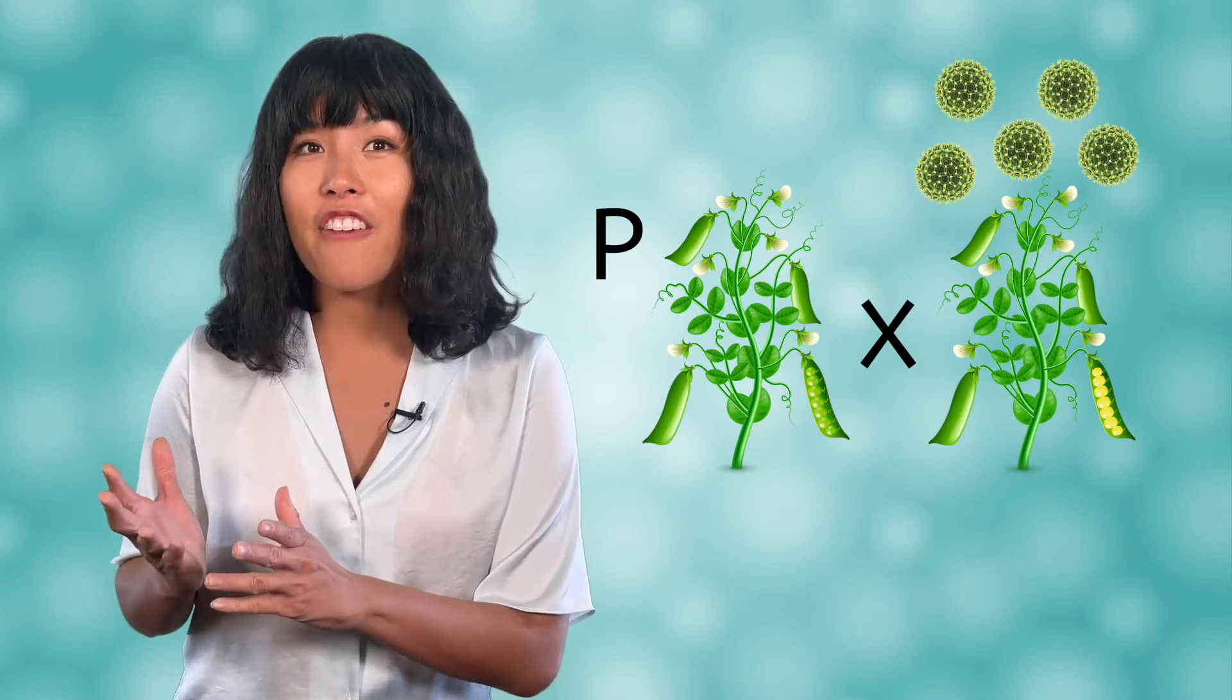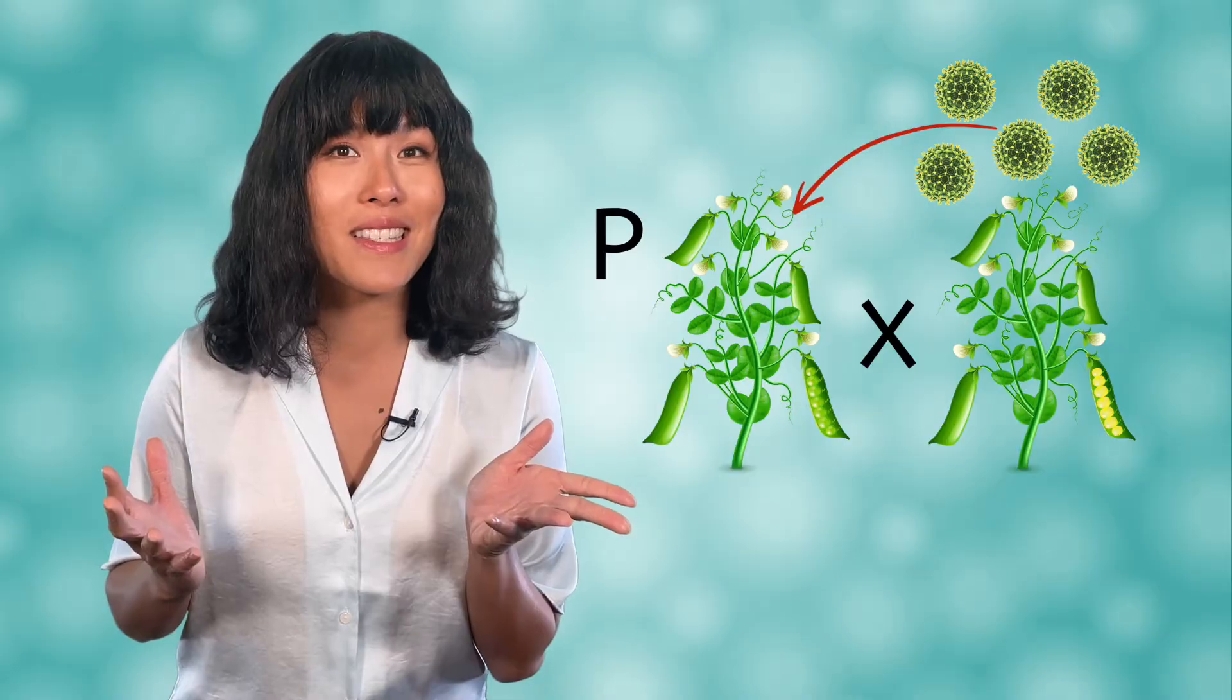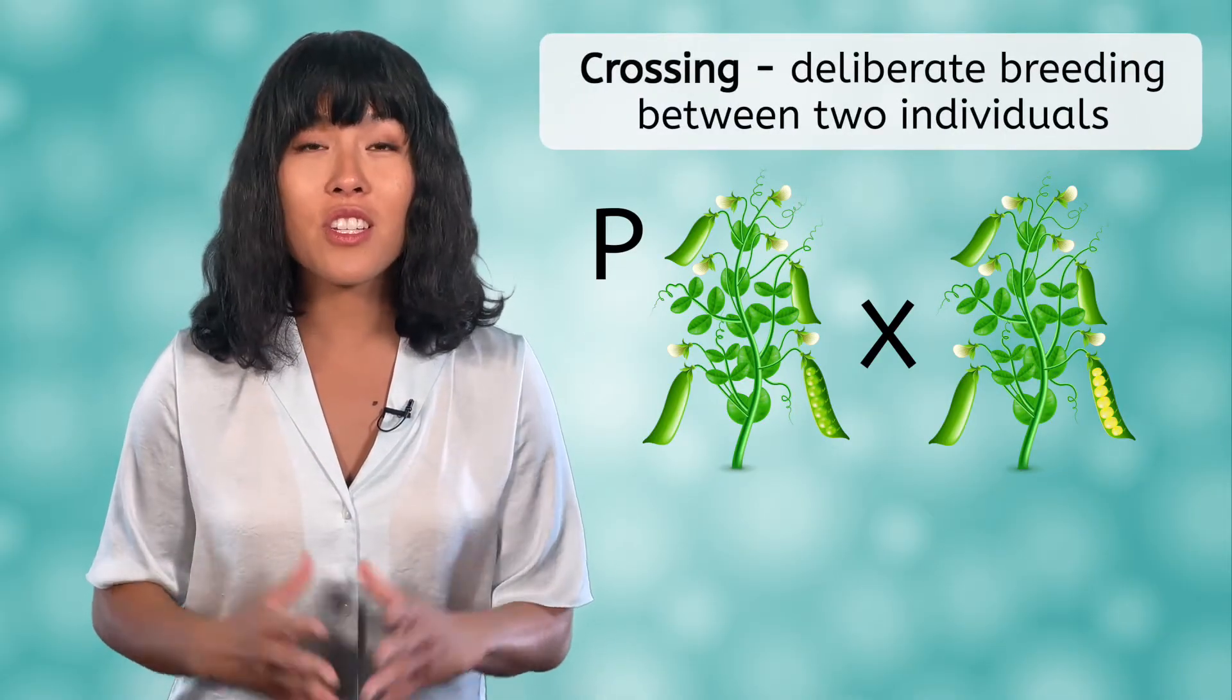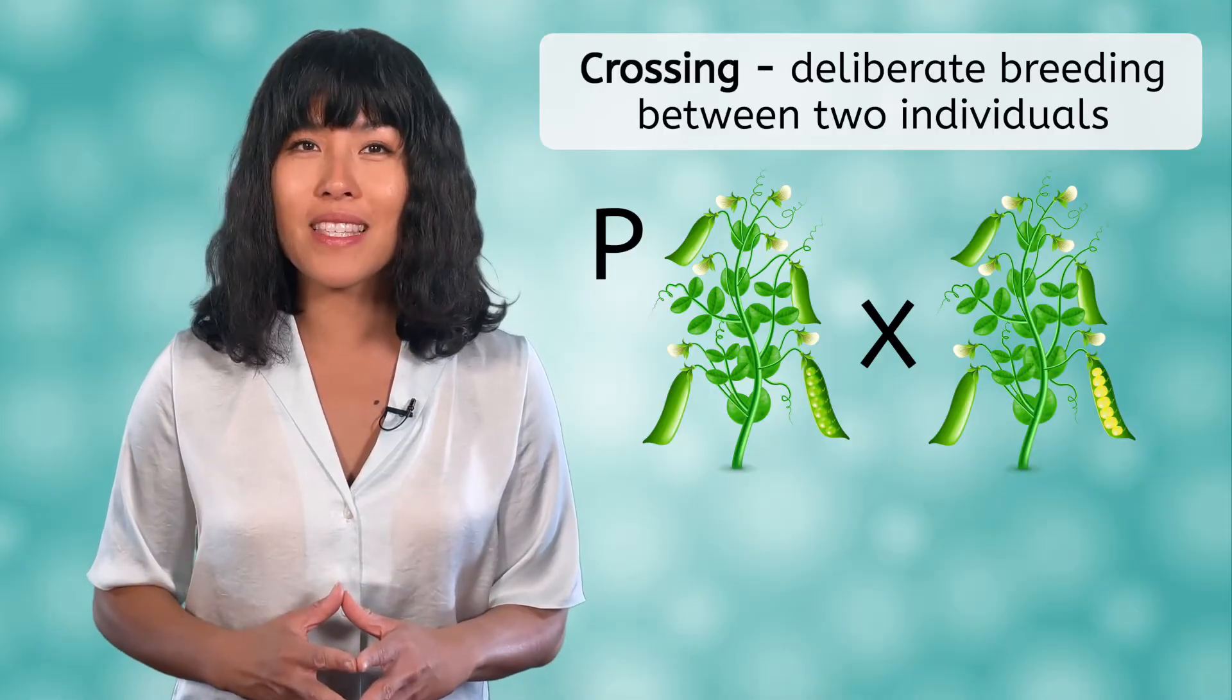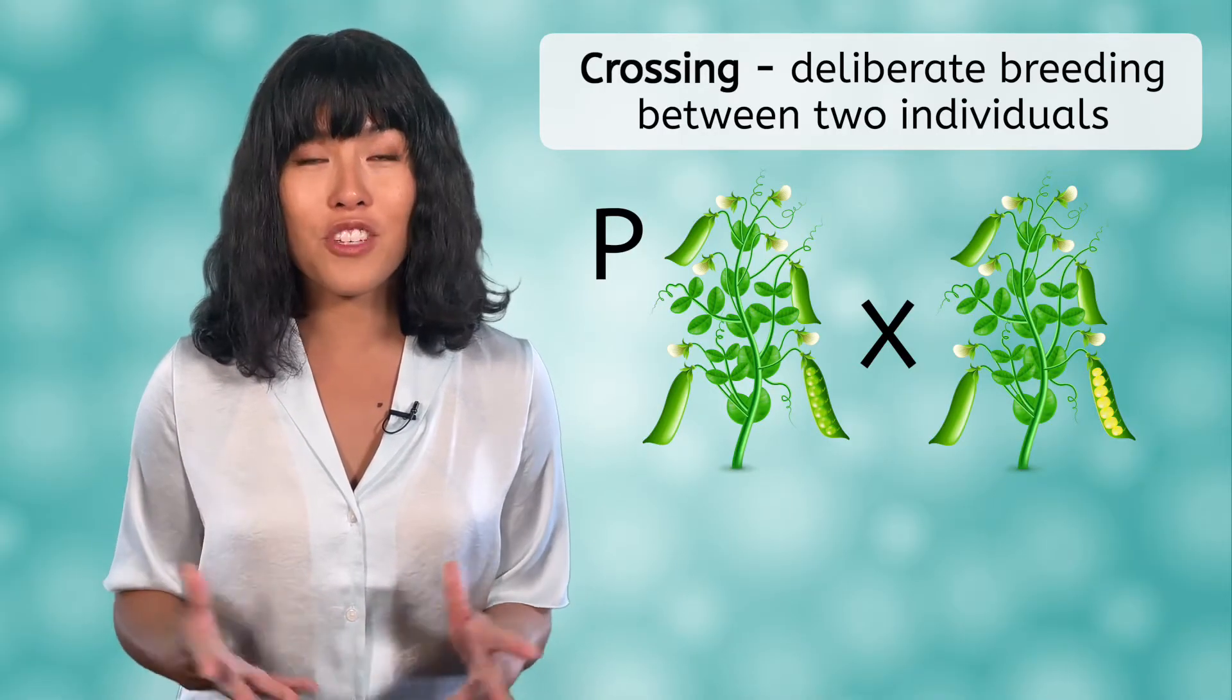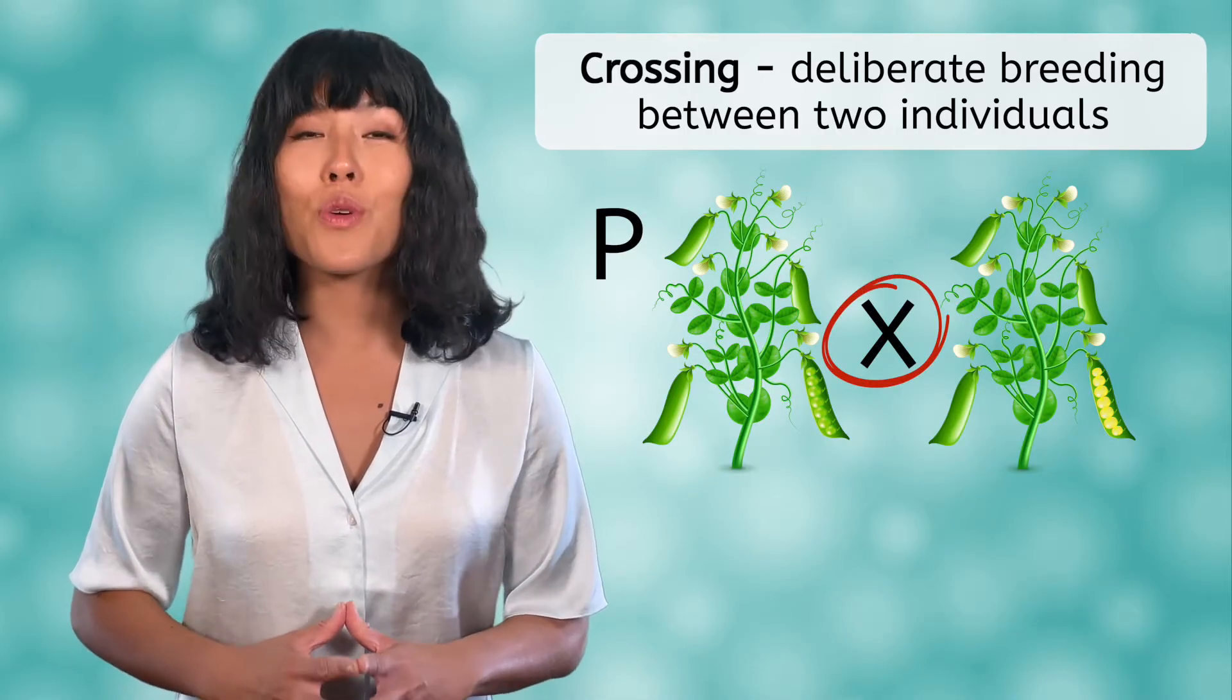Instead of continuing to allow these plants to self-pollinate, he took a purebred plant with green seeds and fertilized it with pollen from a purebred plant with yellow seeds. This is referred to as cross-pollination or just crossing and simply means a deliberate breeding between two individuals for the purpose of genetic study. We usually indicate this with an X between the two traits.